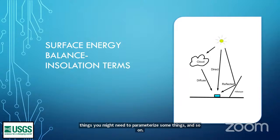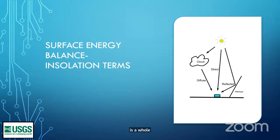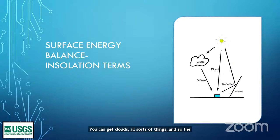You will also need to get the direct, diffuse, and reflected insolation. This is a whole can of worms because you can get a lot of things doing scattering in atmospheres — dust, clouds, all sorts of things — and so the diffuse component is usually a pain to deal with. Best of all would be if you could measure it instead of having to calculate it, because even when you get it out of GCMs there are issues.